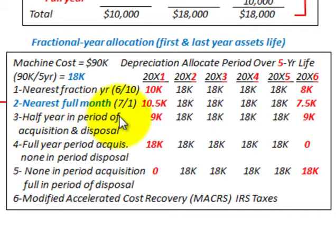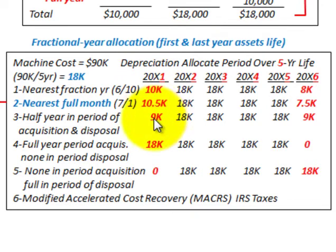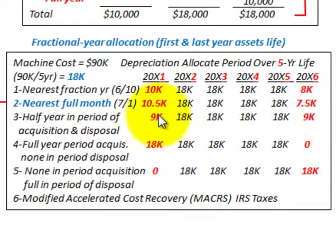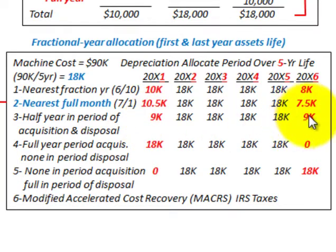Method 3 — Half year in the period of acquisition and disposal: Half of the annual depreciation, $9,000, goes into 20x1, and the other half, $9,000, goes into 20x6. The total amount of $18,000 per year is divided evenly between the beginning period and the ending period.